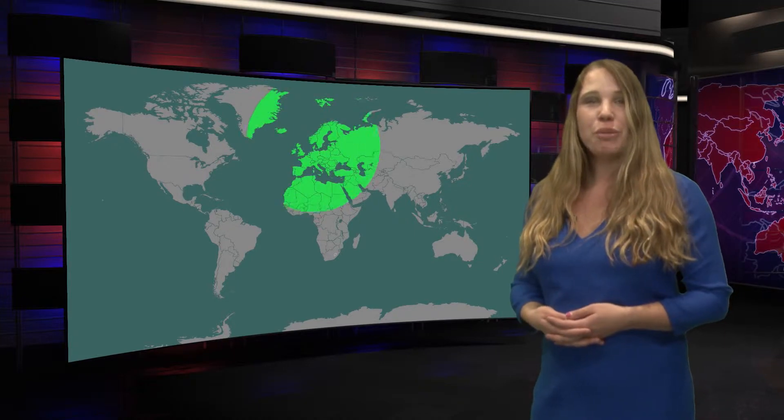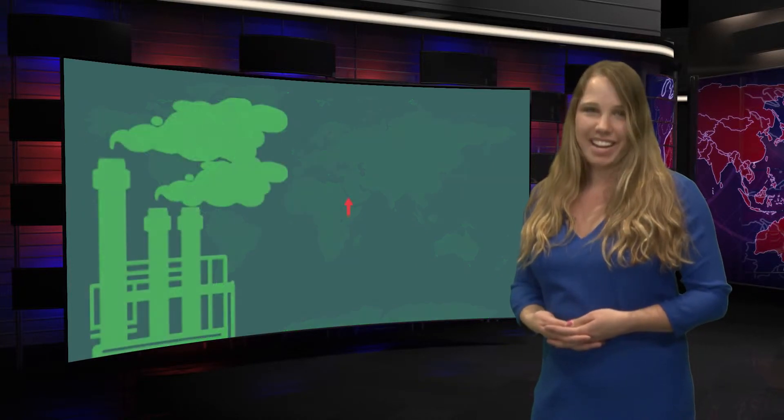The school strike for climate change began in Sweden with one 15-year-old girl. Her message soon spread across the globe. Her interest was initially sparked in a climate change report from the United Nations.